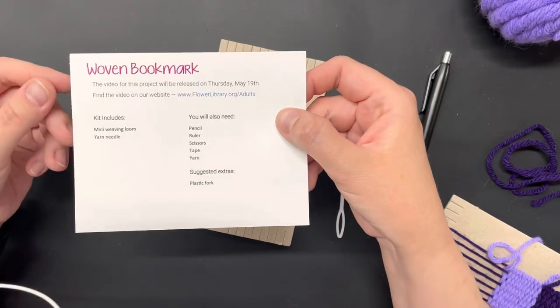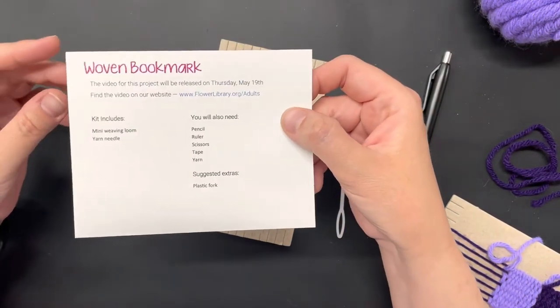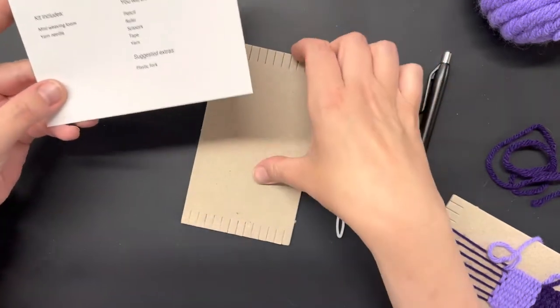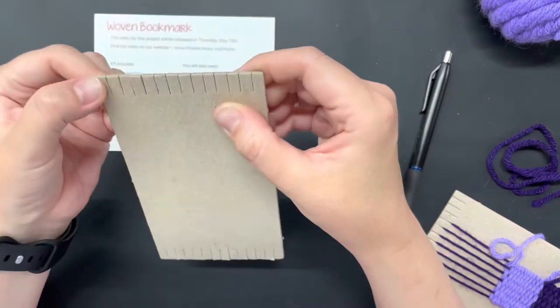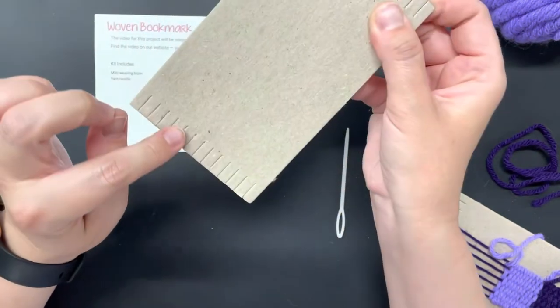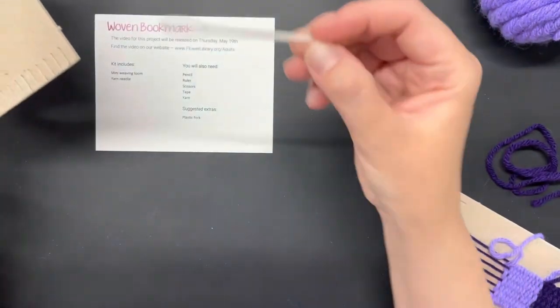Welcome to another Crafting with Roswell. Today I'll be showing you how to make a woven bookmark. In your kit you receive a mini weaving loom, it's actually a piece of sturdy cardboard with little slits cut at the top and bottom, and a yarn needle.